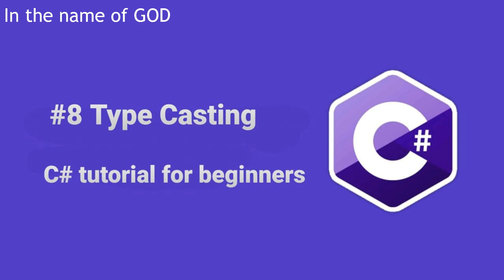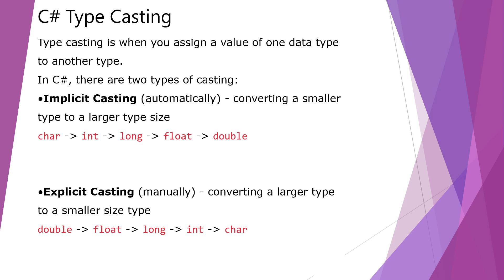Hello guys, in this part we learn typecasting in C#. Typecasting is when you assign a value of one data type to another type. In C# there are two types of casting: implicit casting and explicit casting.